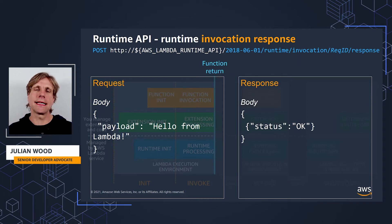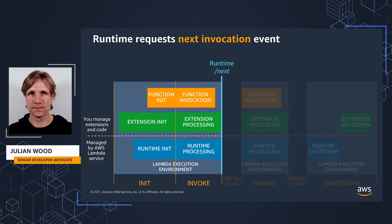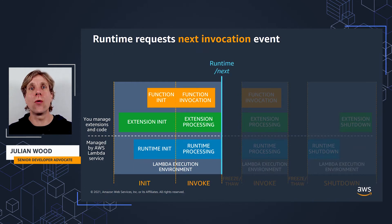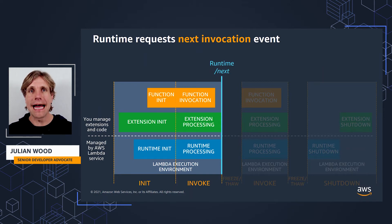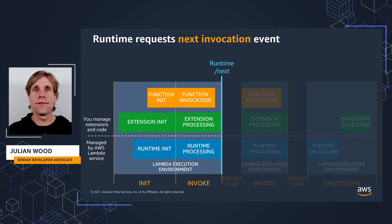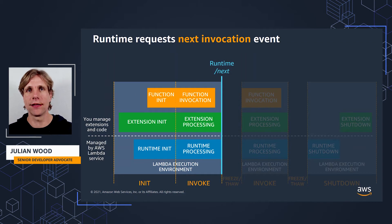Lambda responds back to the runtime that it has received the response. The runtime then calls slash next while the extensions can do more work until it's ready to call next. It's worth highlighting here one of the performance improvements with extensions compared to the preview. We've decoupled the response from the runtime and extensions calling slash next. Lambda returns a response from the function as soon as the handler is done. Extensions can continue to run separately. The function response doesn't have to wait for all extensions to finish processing as it did during the preview.